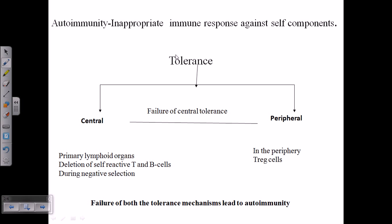This property of recognizing and distinguishing between self and non-self is called tolerance. Tolerance can be divided into two parts: central tolerance and peripheral tolerance. In central tolerance, we are talking about tolerating self peptide molecules as one's own. This occurs inside the primary lymphoid organs during T and B cell maturation.